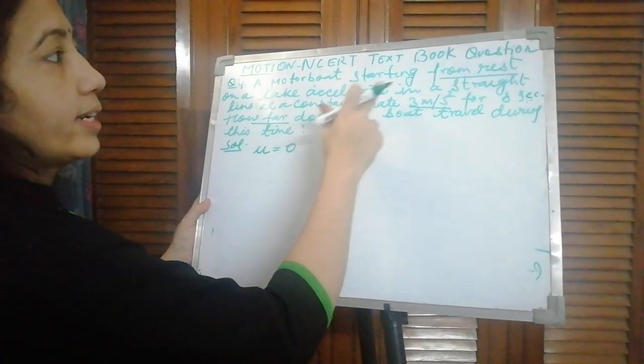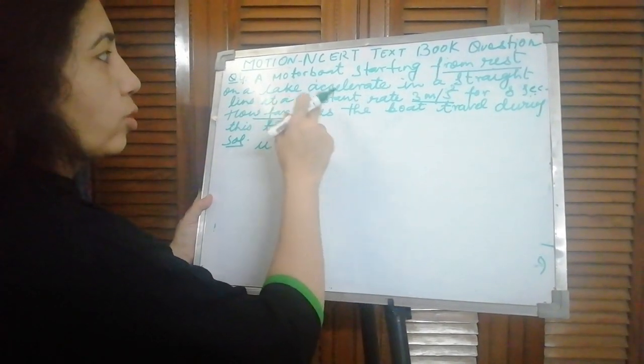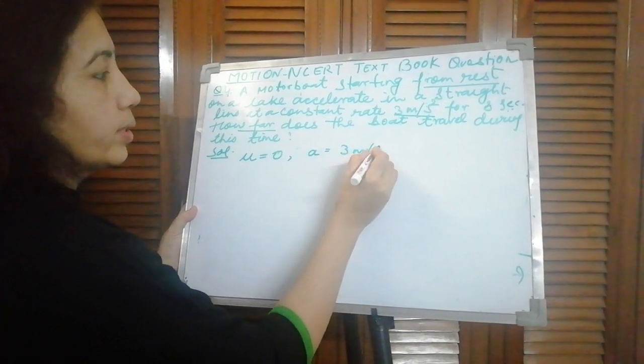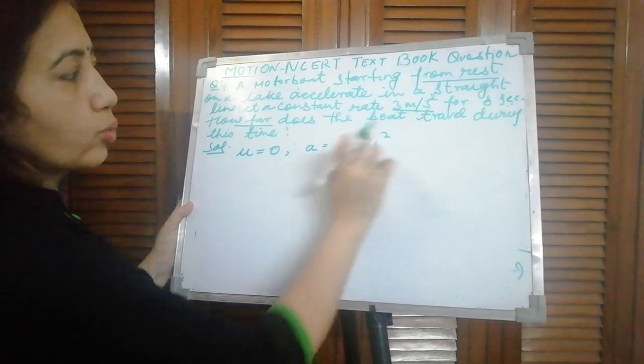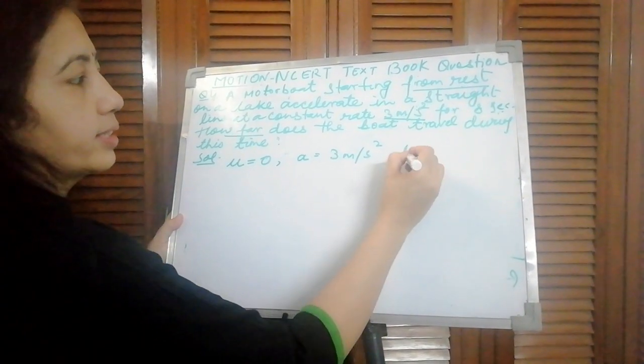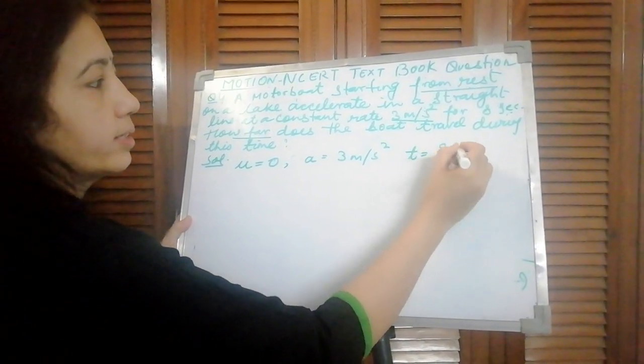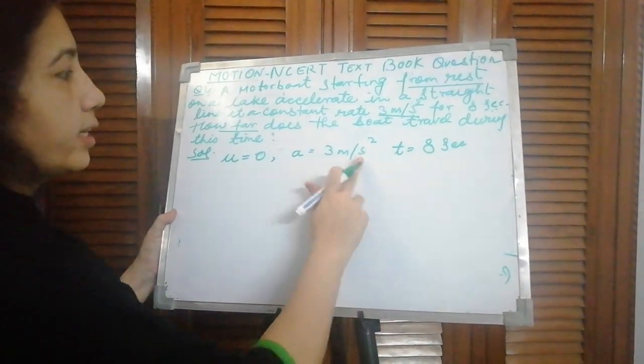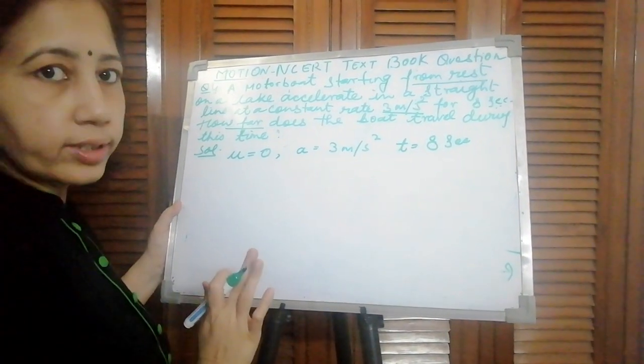On a lake, accelerates in a straight line at a constant rate. So acceleration is given: 3 meter per second square. Wherever there is square, there acceleration. For 8 seconds, time is given 8 seconds. See the units: here seconds, here seconds, this is meter. No need to convert the unit.